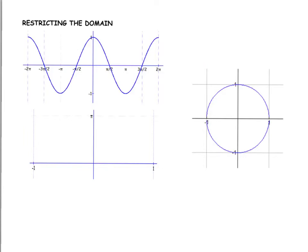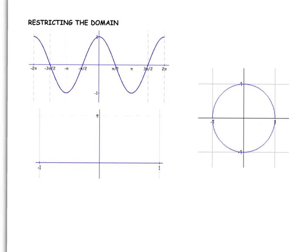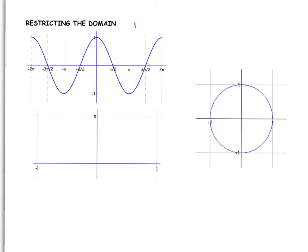So here we have our cosine graph, and the issue now is that its inverse will fail the vertical line test so long as this fails the horizontal line test. So we can see that this fails the horizontal line test, so we need to fix that.